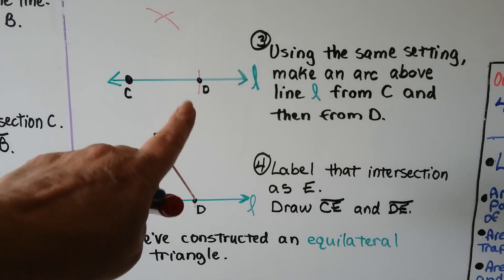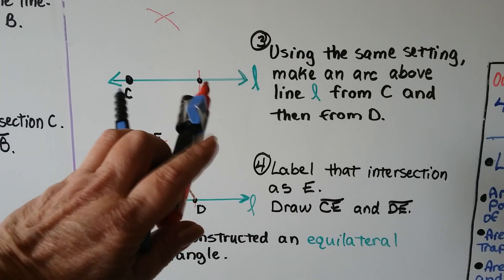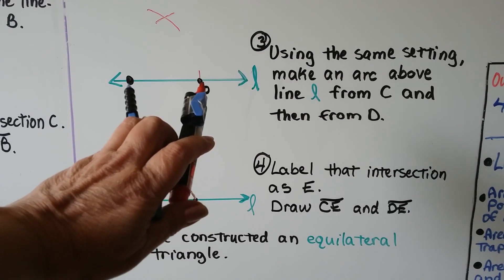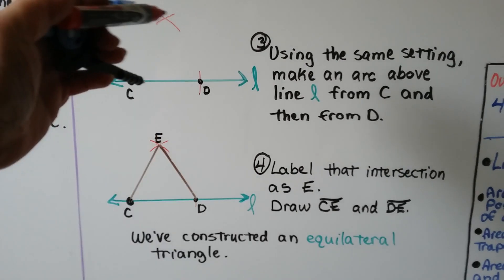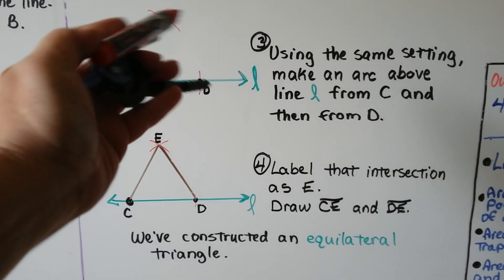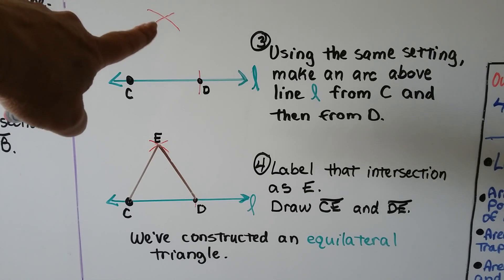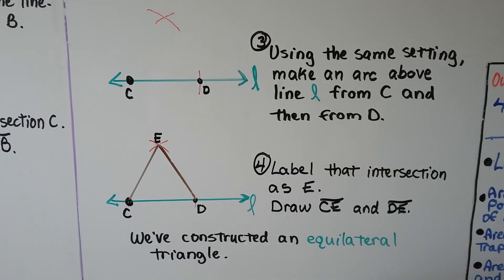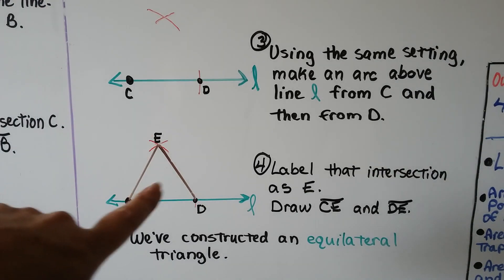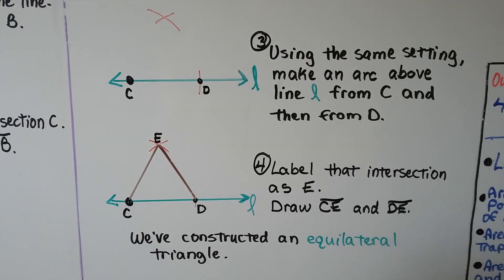Now that we've got D, we use the same setting from C to D and we put our point on C and make an arc and put our point on D and make an arc. And we can label that E. We just draw CE and DE and we've constructed an equilateral triangle.